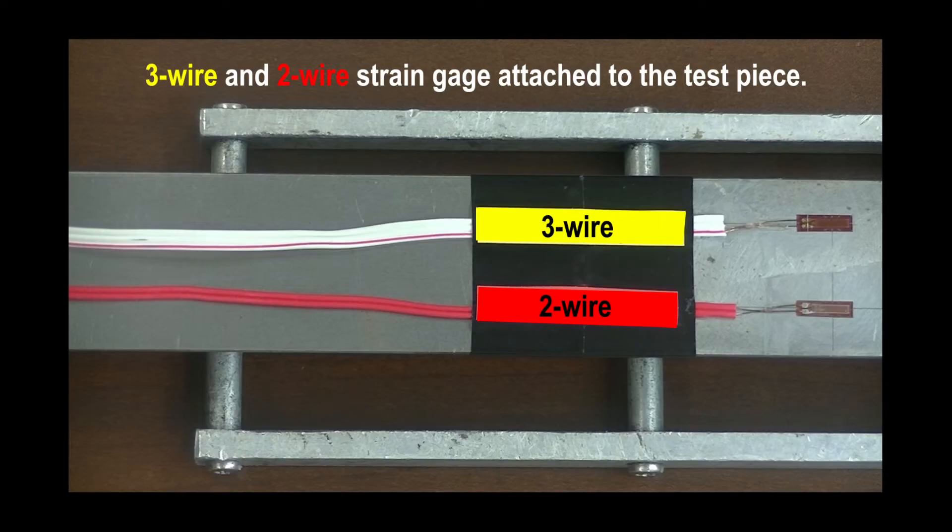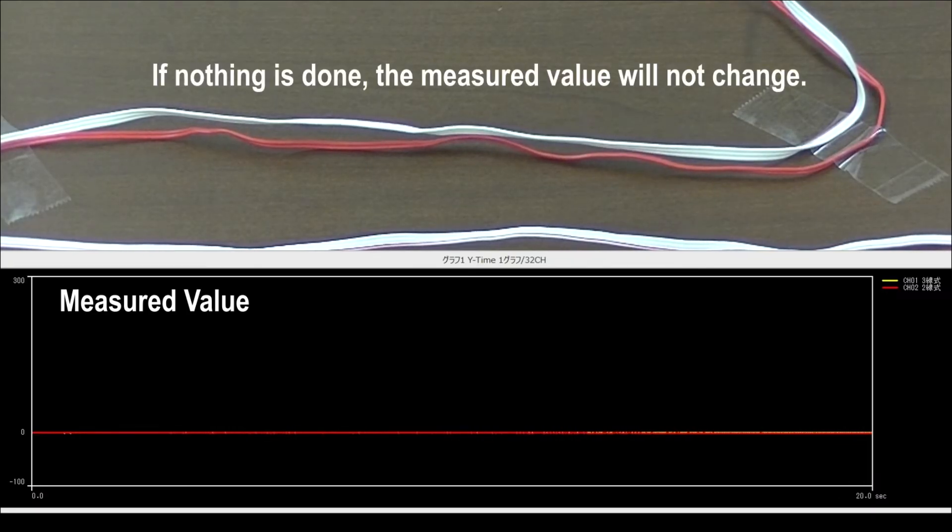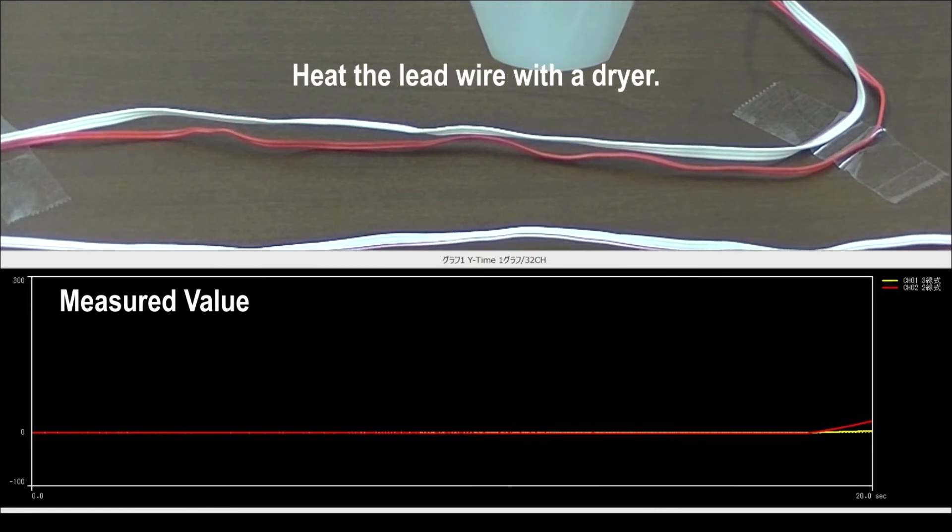Here you can see the two gauges on the same material without any loading. We can make a simple demonstration of this using a hot air gun. When we apply heat to both sets of lead wires, we can see the effect immediately.